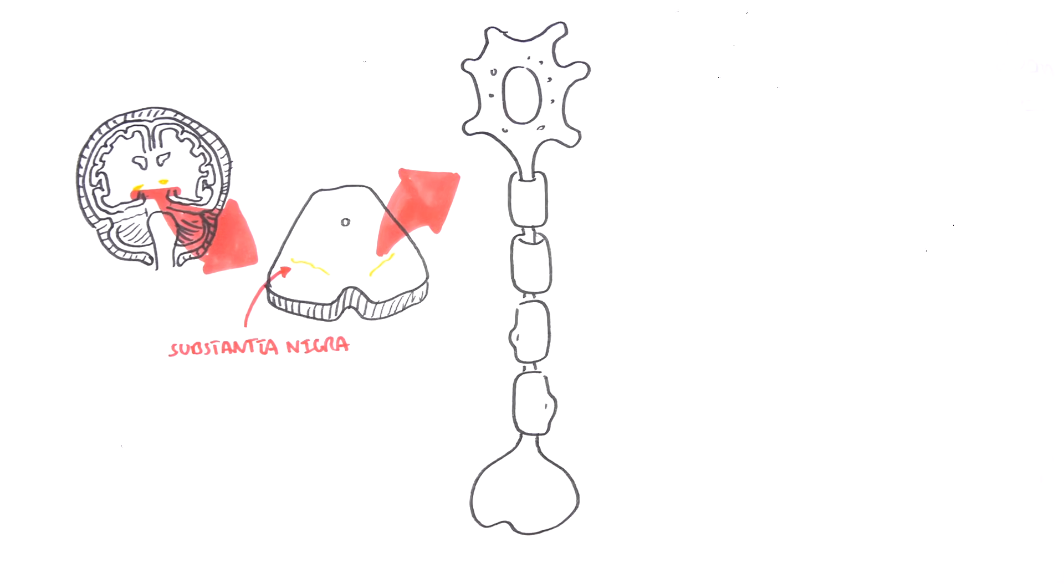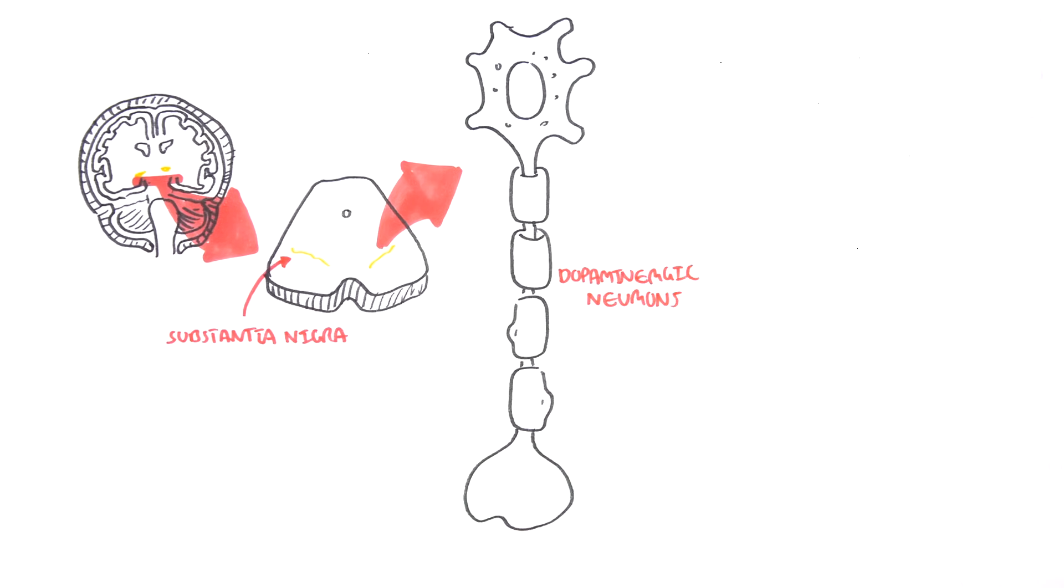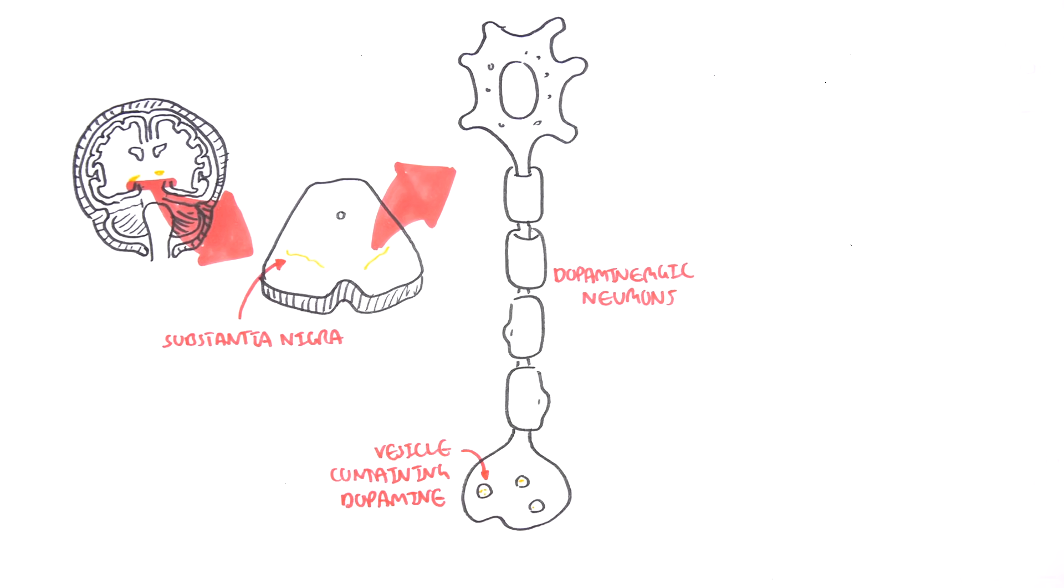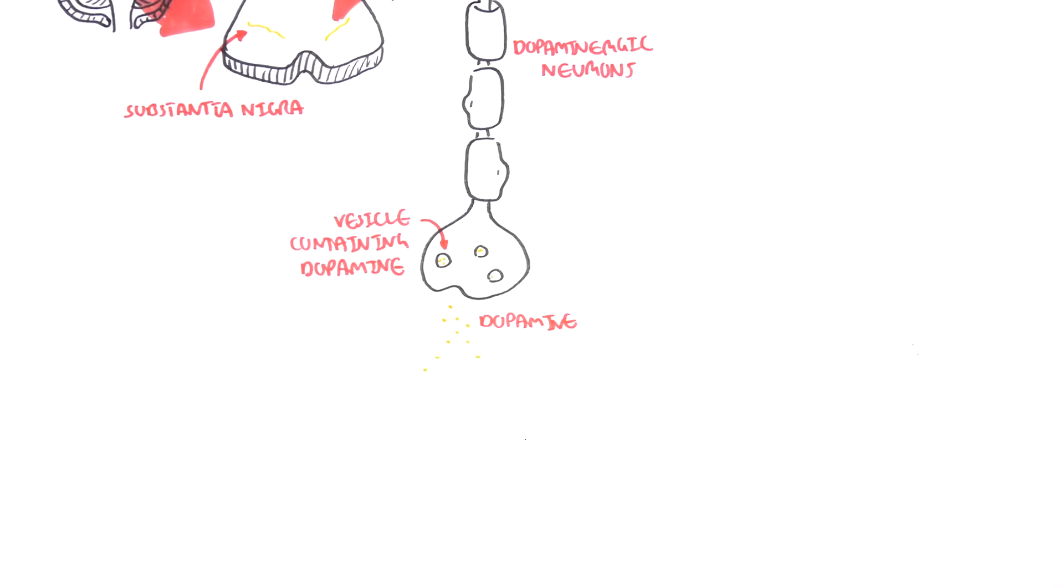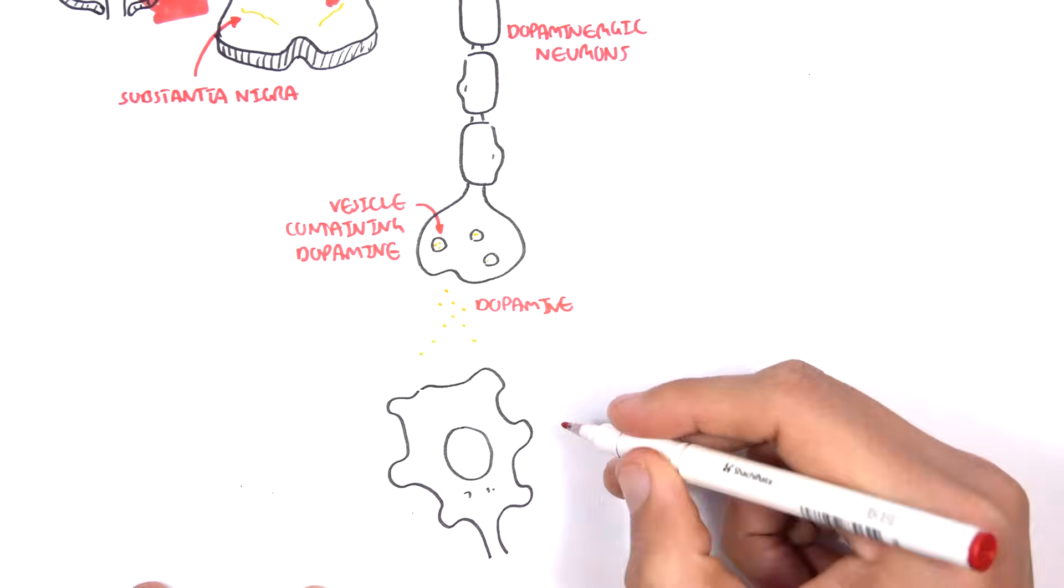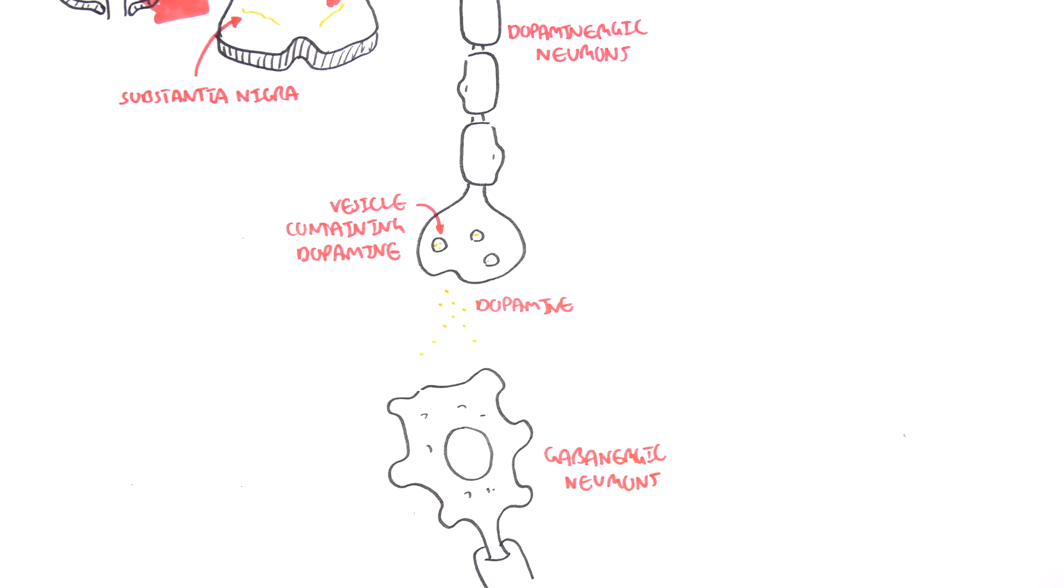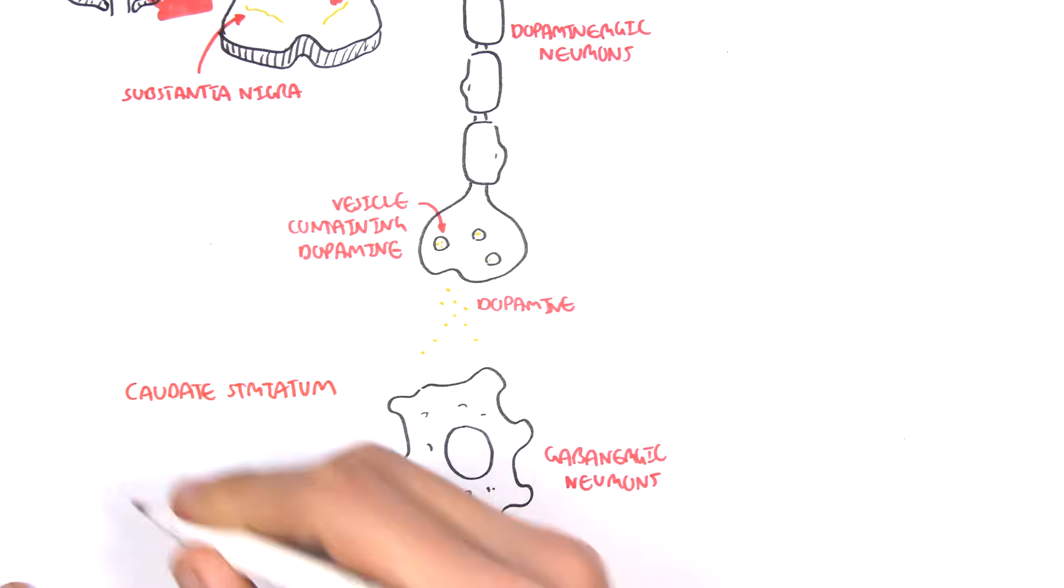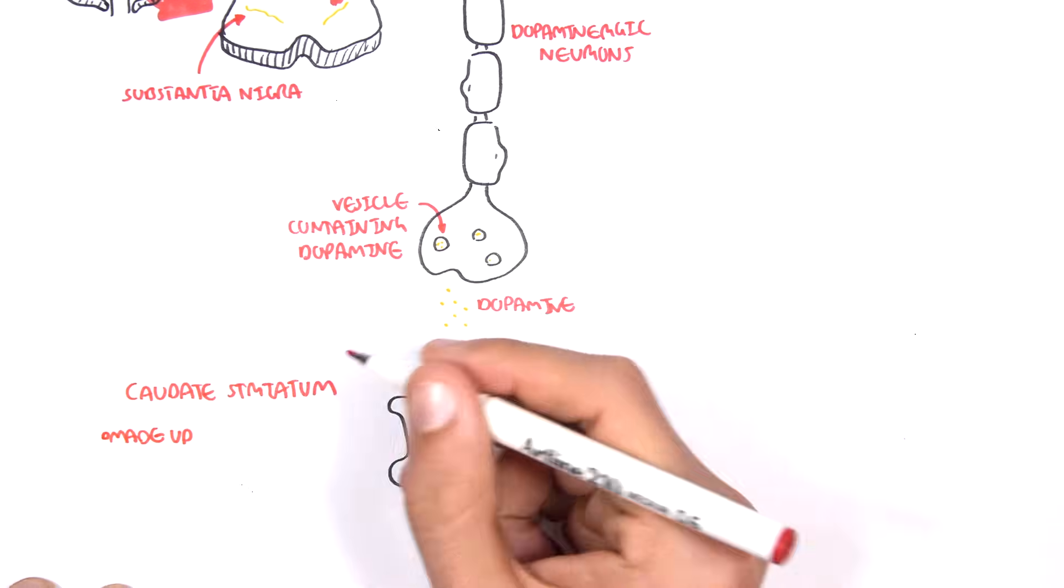Dopaminergic neurons contain dopamine vesicles in the terminal here, and they are able to secrete dopamine. When they secrete dopamine, it will essentially either stimulate or inhibit these gabanergic neurons here.